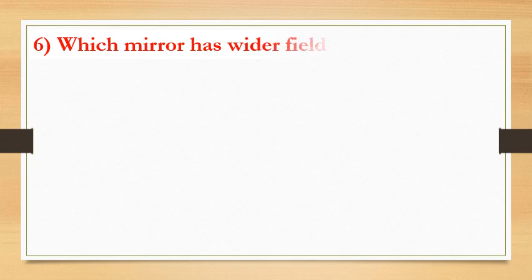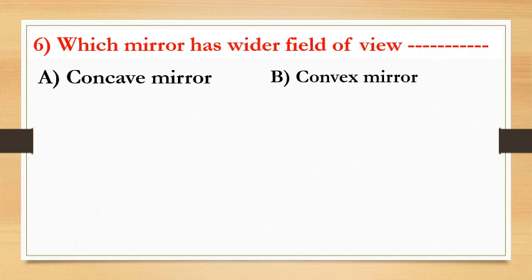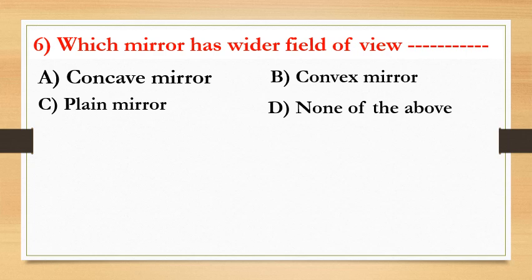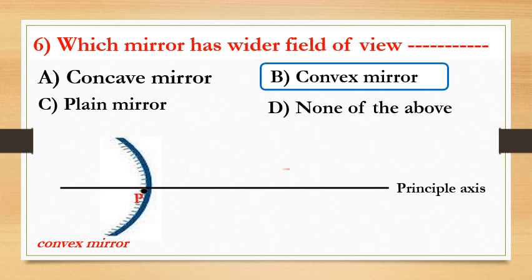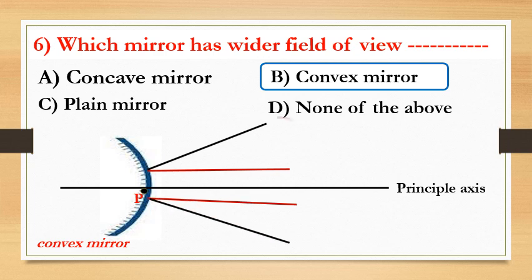Which mirror has a wider field of view? Option A: concave mirror. Option B: convex mirror. Option C: plane mirror. Option D: none of the above. The answer is convex mirror. Observe the following video — we take a convex mirror, draw a principal axis, and identify the pole, incident ray, and reflected ray. This region is the field of view, so the convex mirror has a wider field of view.